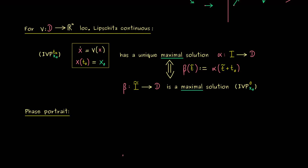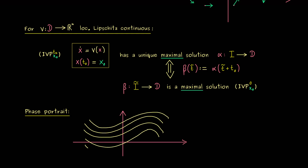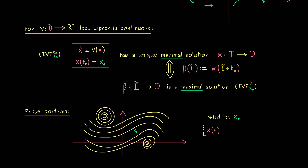As a picture, the phase portrait is not so complicated. It is visualized in R^n, or more concretely in our domain D, and we simply put all the orbits we have into this picture. The question is: what is the mathematical definition of an orbit? For example, we could ask what is an orbit at a chosen point x0. As you can see in the picture, it should be a subset of R^n given by the values of a solution alpha — and since we can choose a maximal solution, alpha is the maximal solution and t goes through all possible time points in I, the domain of alpha for the initial value problem.